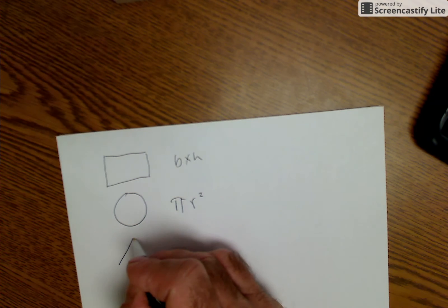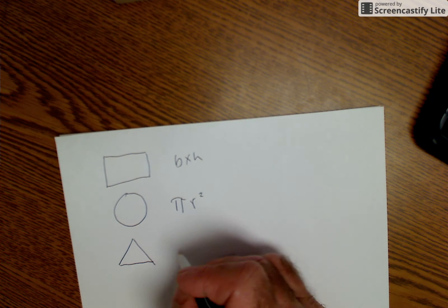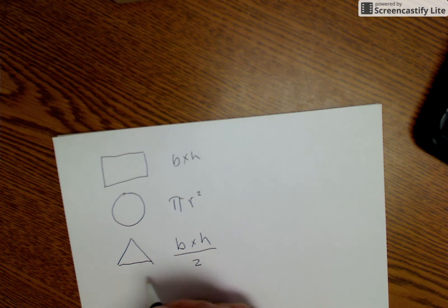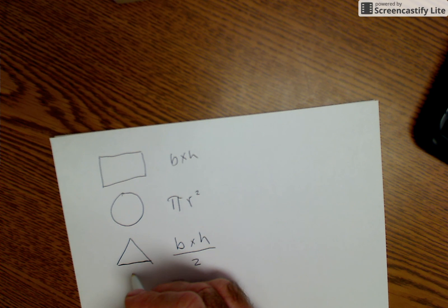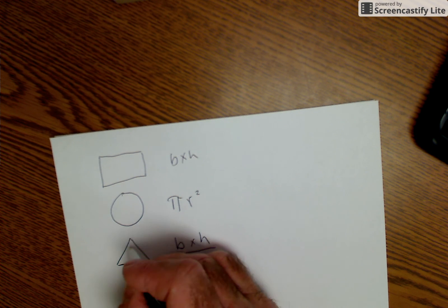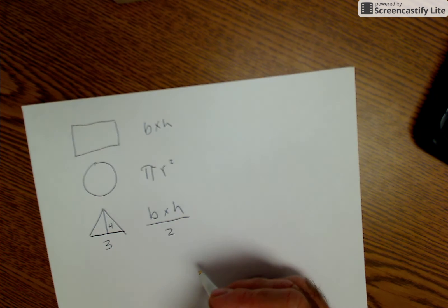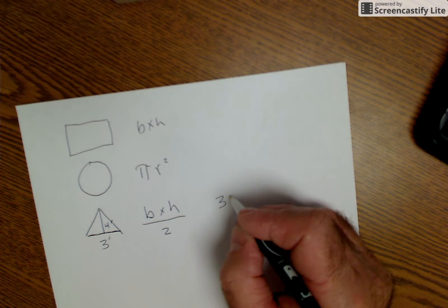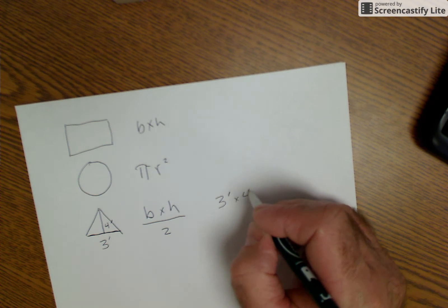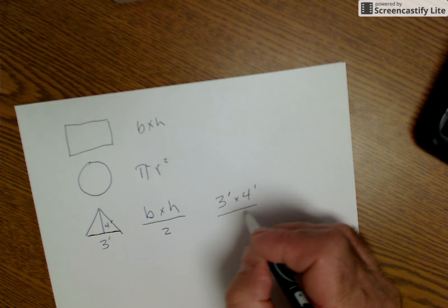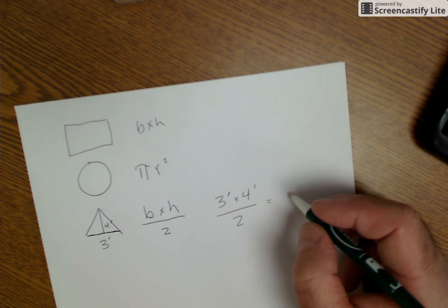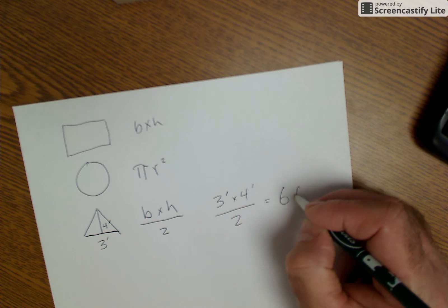The area of a triangle is base times height divided by 2. If I have a base of 3 feet and a height of 4 feet, the area is 3 feet times 4 feet divided by 2 — that's 12 square feet divided by 2 — which equals 6 square feet.